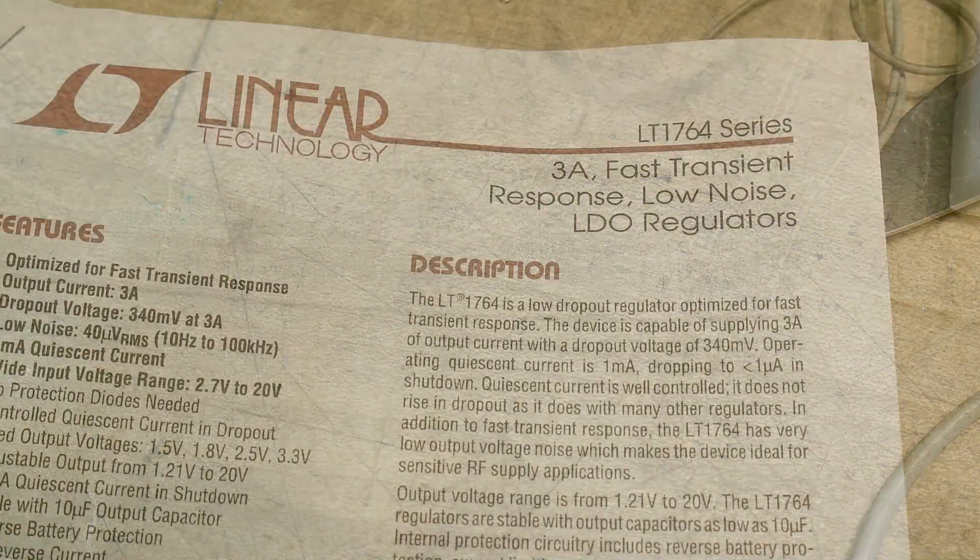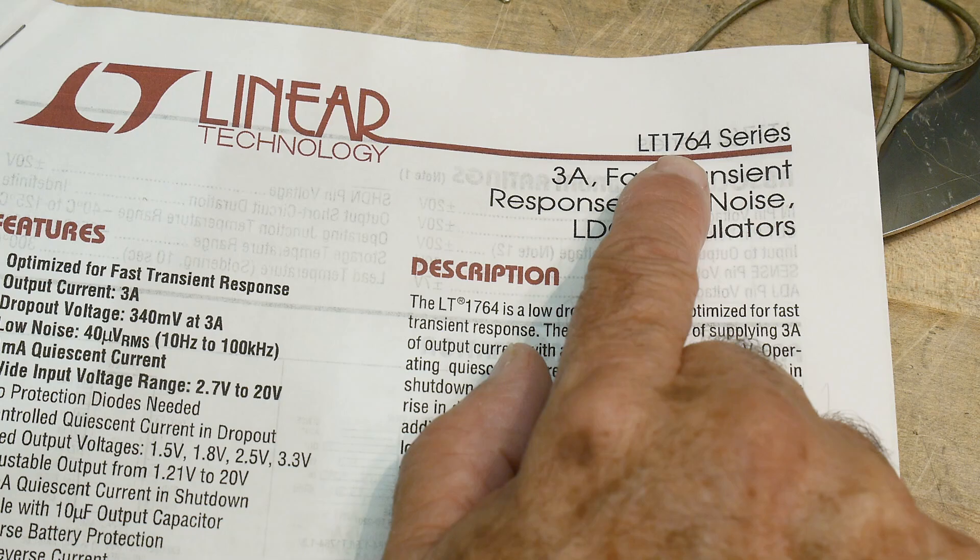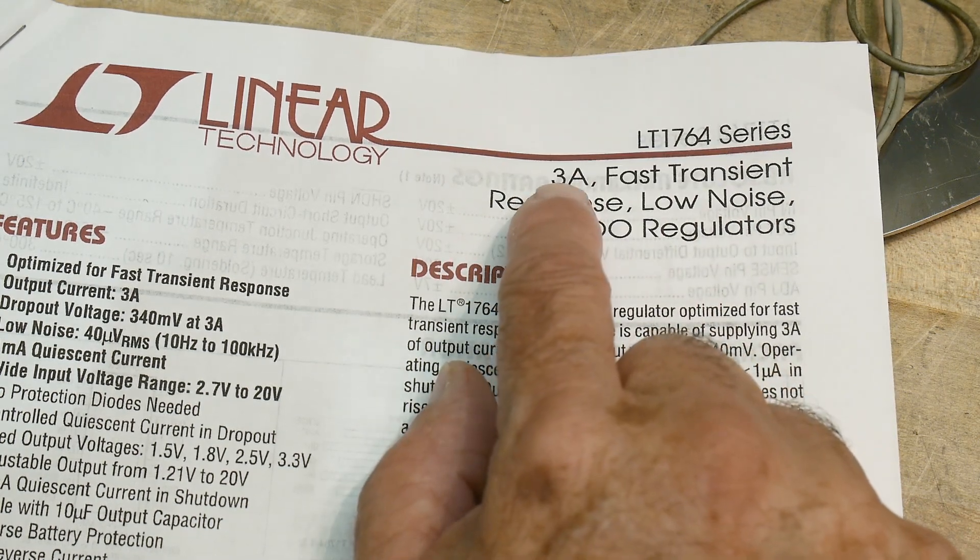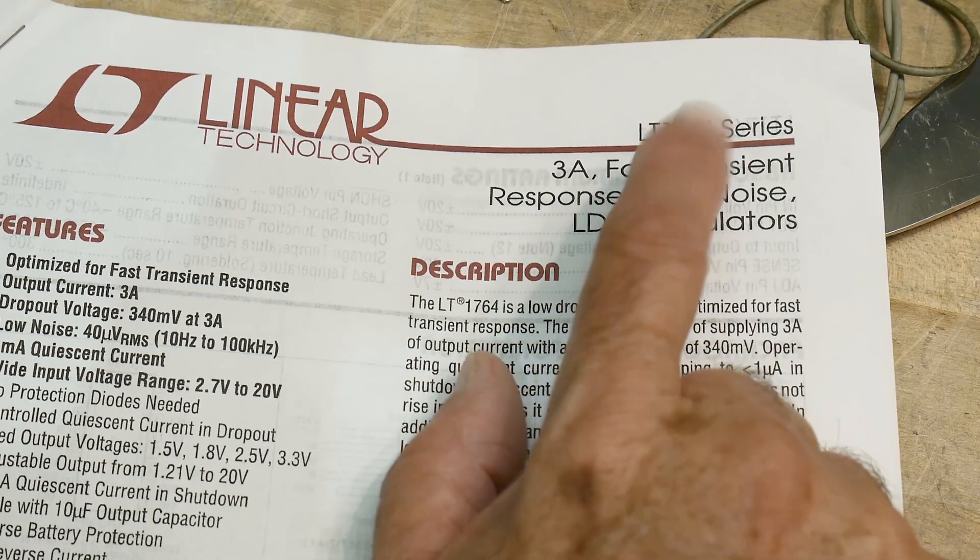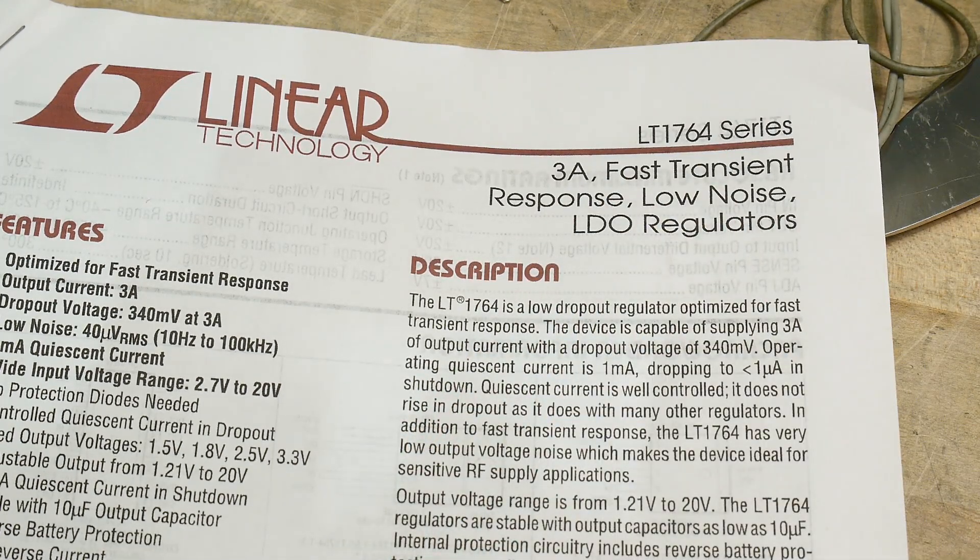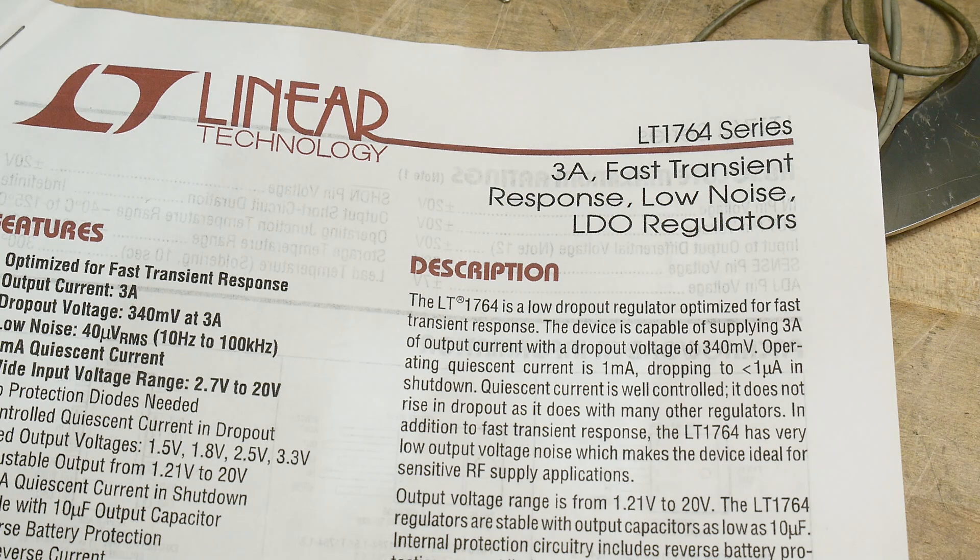Alright, the chip of the day is an LT1764, a 3-amp fast transient response, low-noise LDO regulator. Yeah, these are really nice parts. I haven't used them before. Like I said, I got a bunch of parts for free - somebody gave them to me.